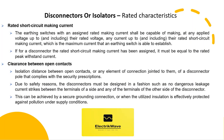Earthing Switches with an assigned rated making current shall be capable of making, at any applied voltage up to and including their rated voltage, any current up to and including their rated short circuit making current, which is the maximum current that an Earthing Switch is able to establish. For a Disconnector, the rated short circuit making current must be equal to the rated peak withstand current.